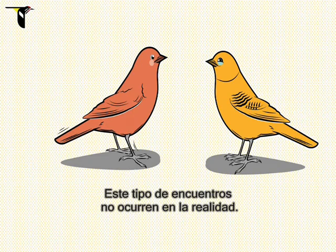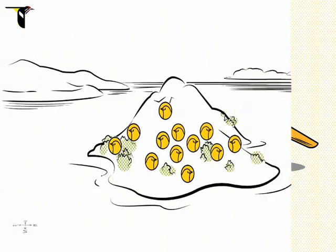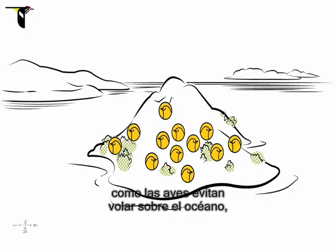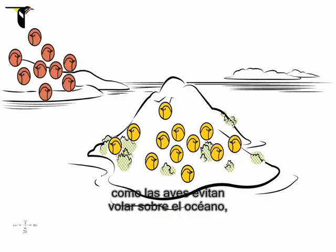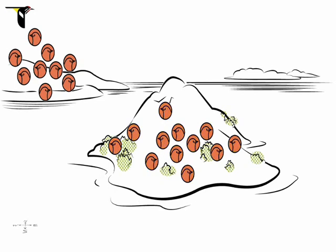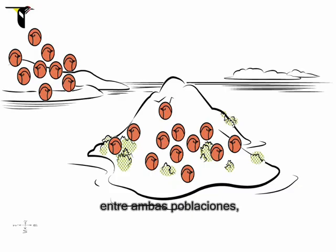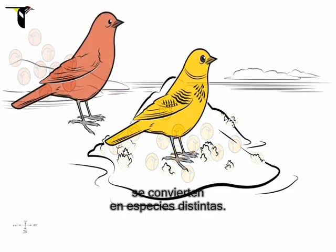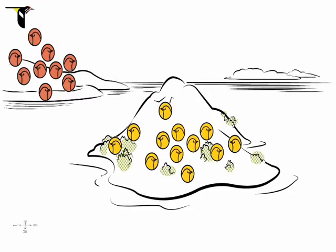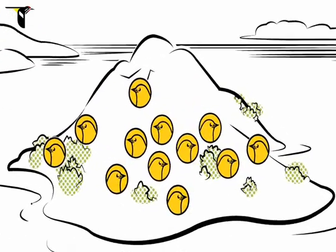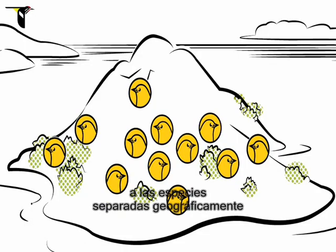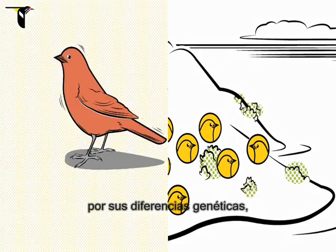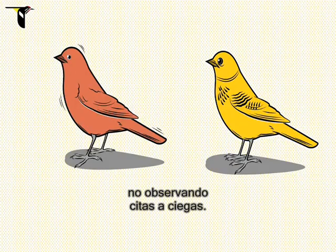But these kinds of dating matchups don't happen in reality, because our birds avoid flights across the open ocean — island birds do not regularly encounter mainland birds. Because genes from the two populations no longer intermix, genetic differences accumulate, and the two populations become different species. So in practice, scientists classify species separated in space by their genetic differences, not by observing blind dates.